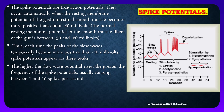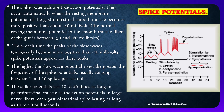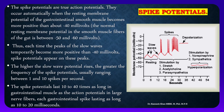The higher the slow wave potential rises, the greater the frequency of spike potentials, usually ranging between 1 and 10 spikes per second. The spike potentials last 10 to 40 milliseconds — much longer than action potentials in large nerve fibers. Each gastrointestinal spike lasts as long as 10 to 20 milliseconds.